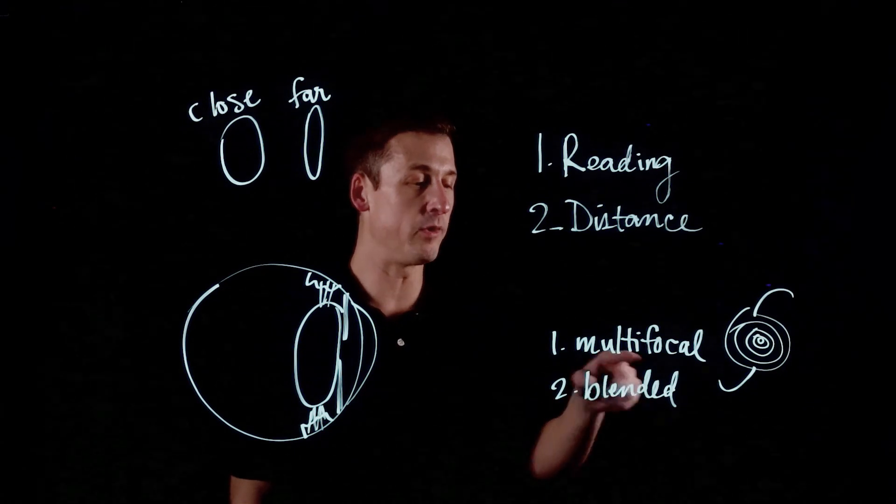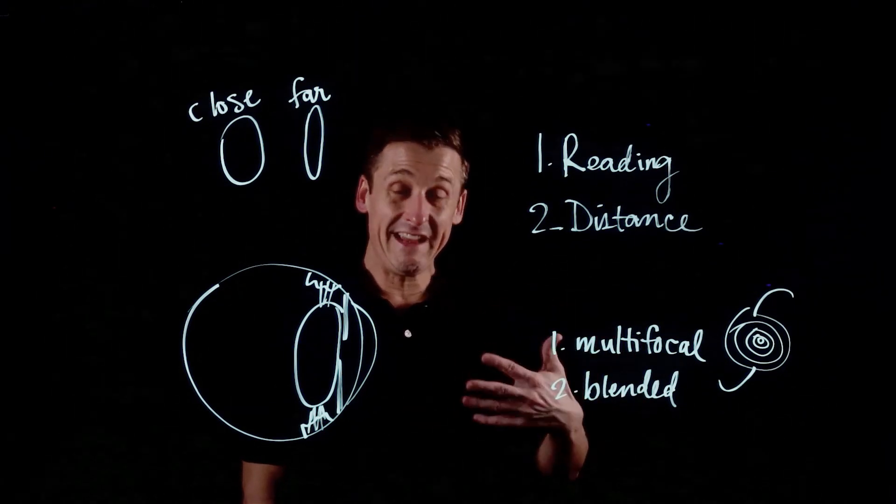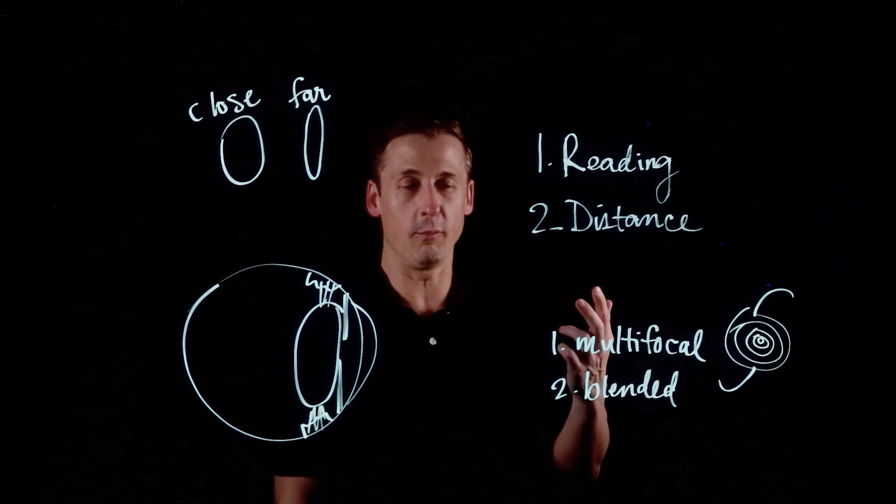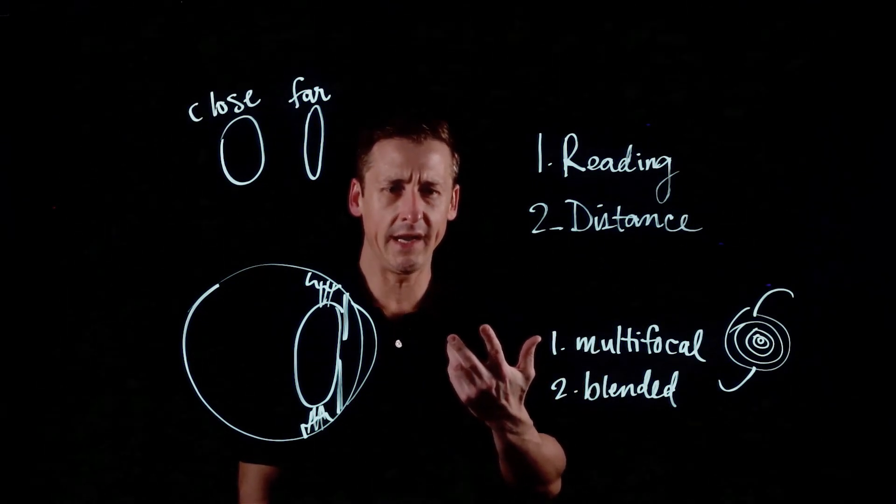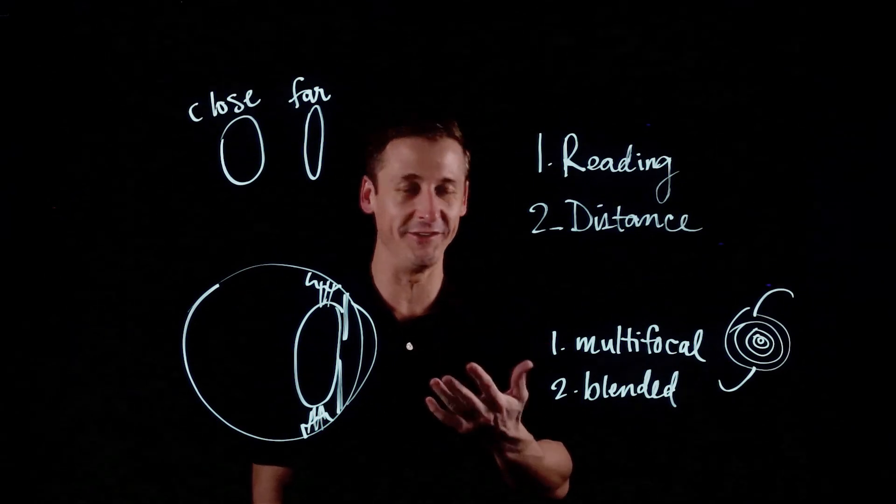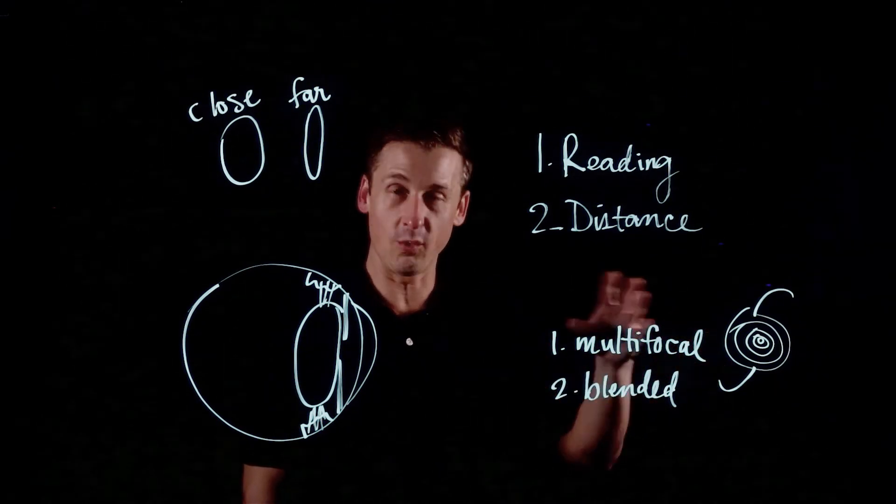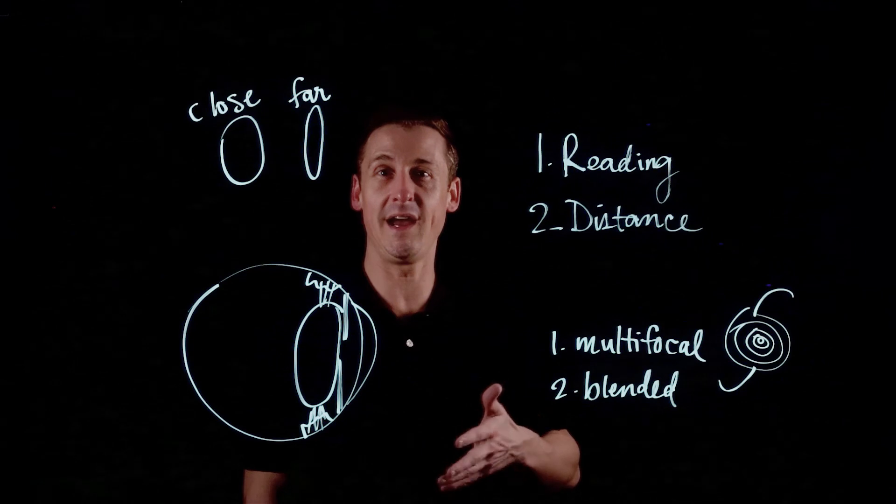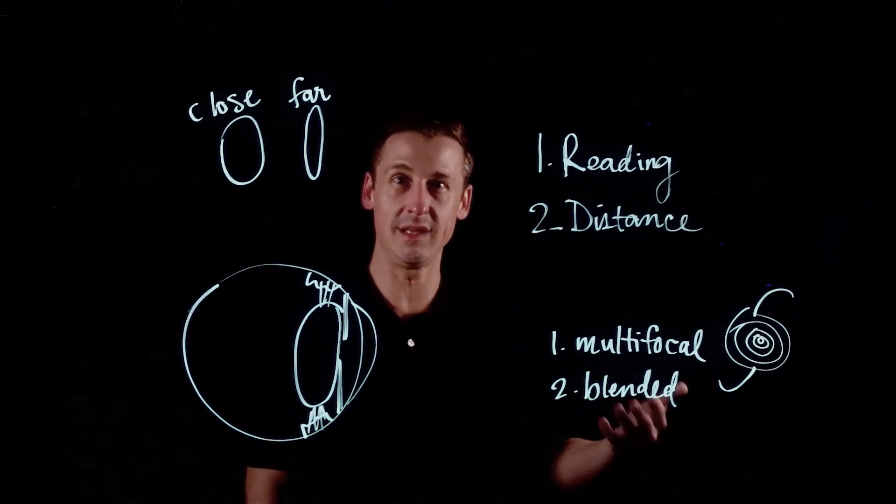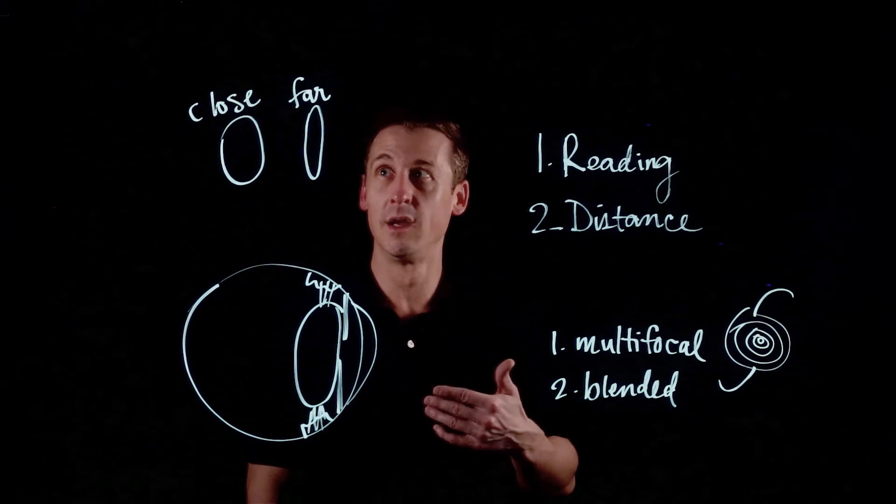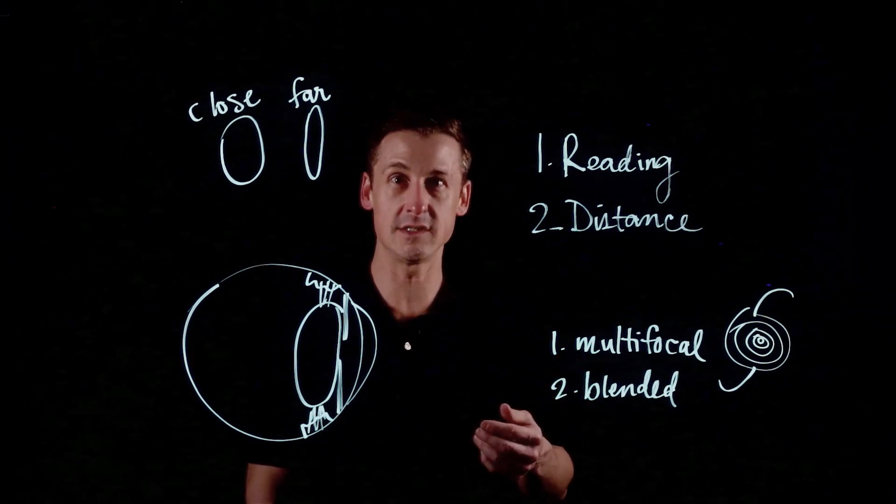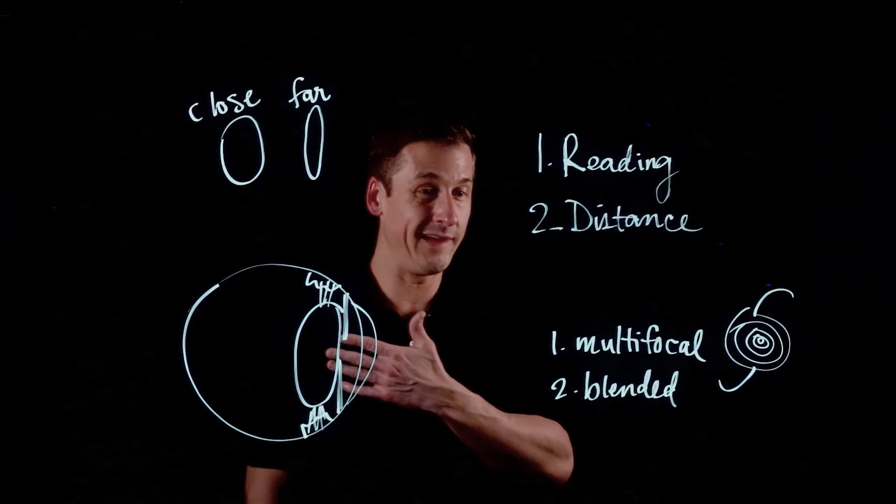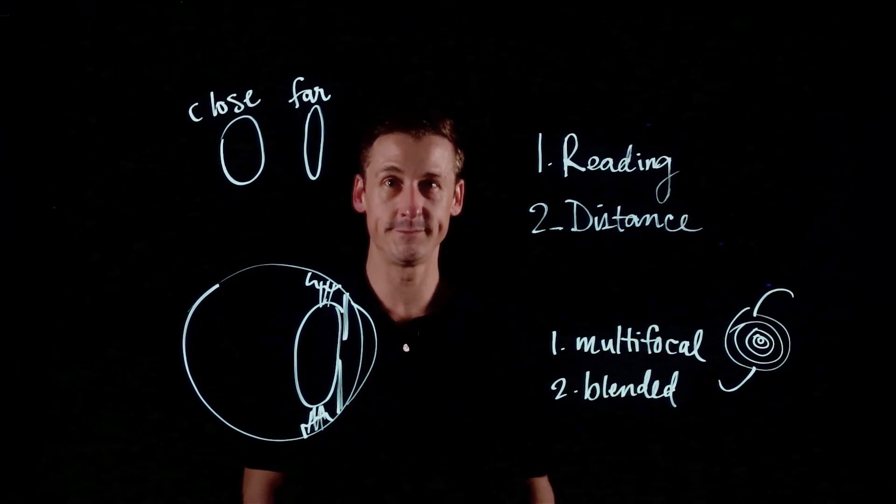So with blended vision, the advantage to it is it's very customizable. You can tweak for a little bit more near or a little bit more distance, and all of that stuff is helpful because it's nice to be able to have options. Either one of these can be a really good option in order to get distance vision and near vision both. It's best to get a bunch of diagnostic testing to figure out what might be the best option for you and to talk through that with somebody that really loves this stuff and knows the details on it. Because if you play your cards right—and I think you can—then you can get distance and near vision. And once you have it, it's permanent for the rest of your life.